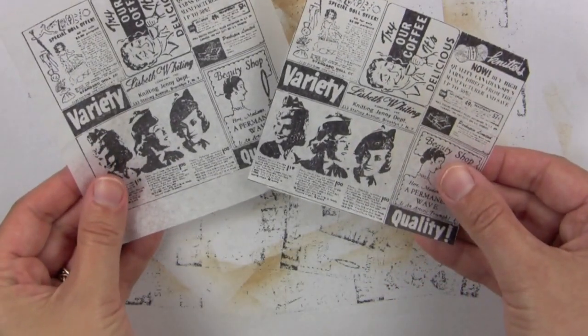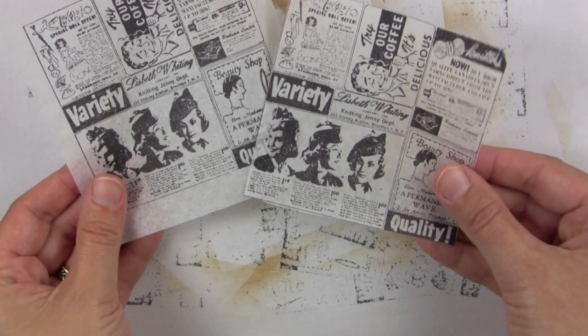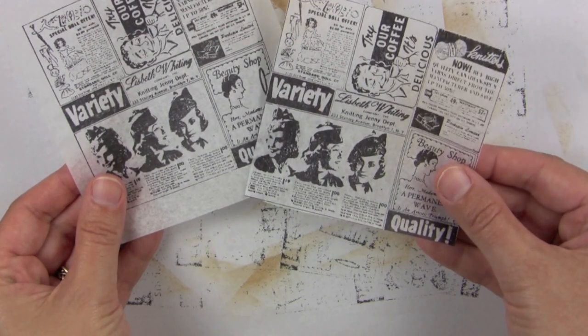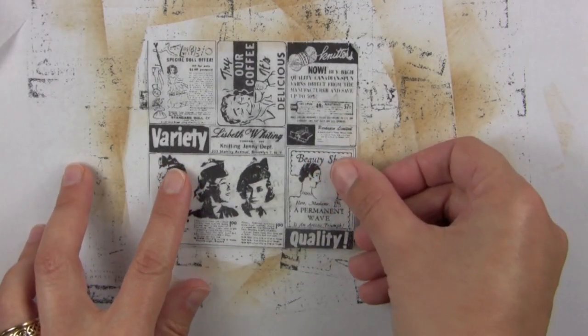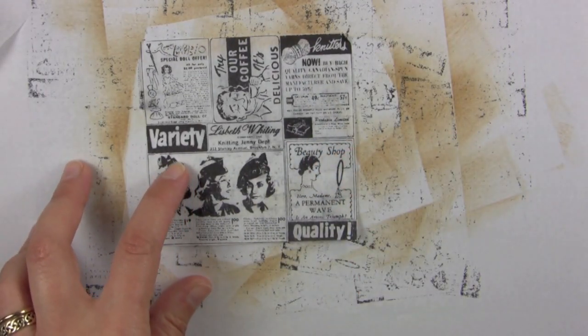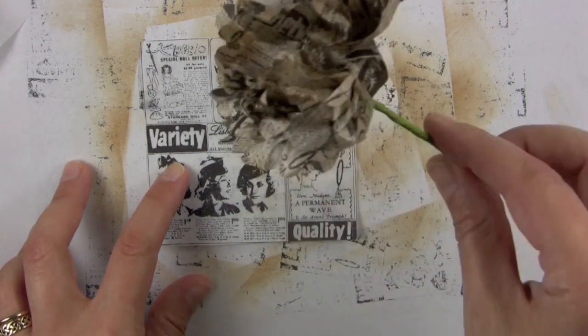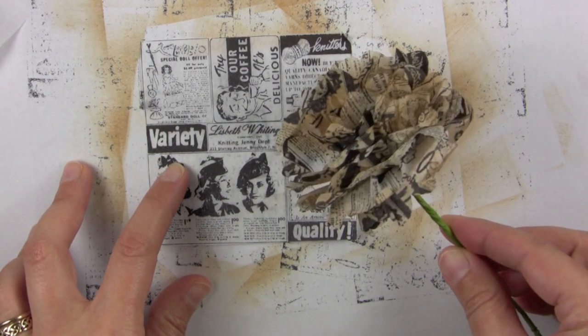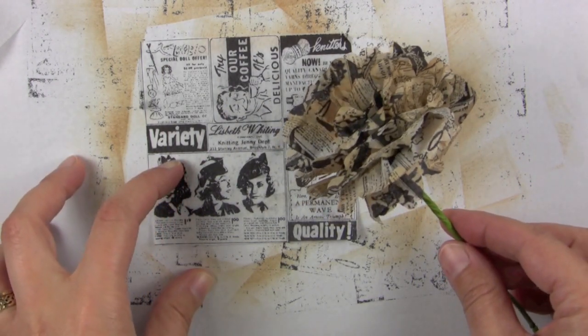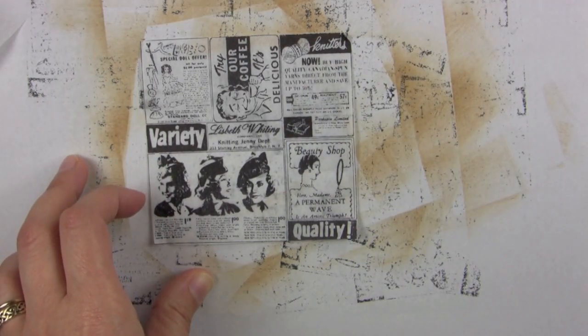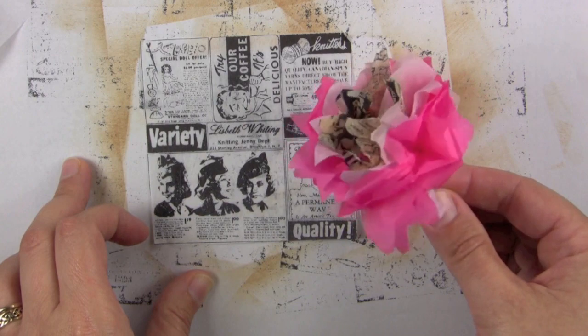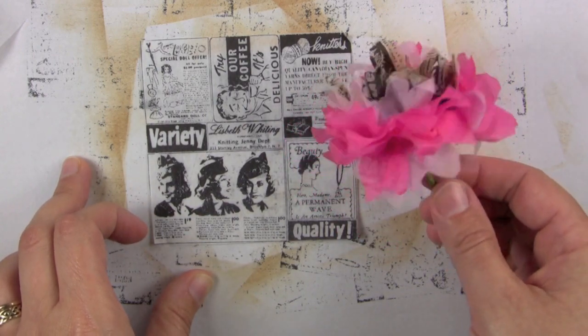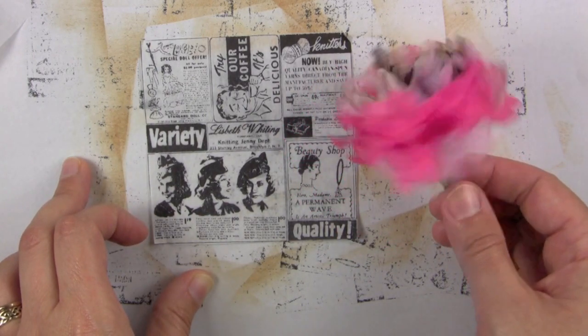So then the next step is to go ahead and cut out the tissue paper stamped image after it's dried, and then we're going to want to distress it. So if you were going to make a flower like this, you would do this to about eight different layers, but I want to show this one today and it only uses the one stamped layer. So you'd repeat this step for however many layers you have.